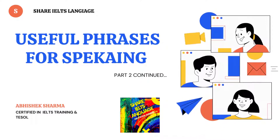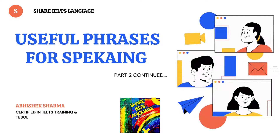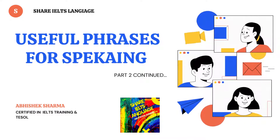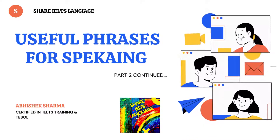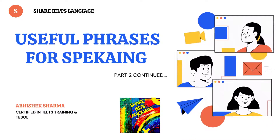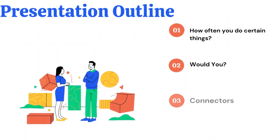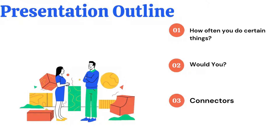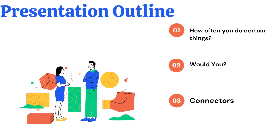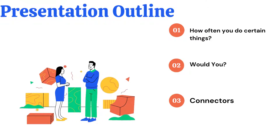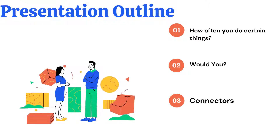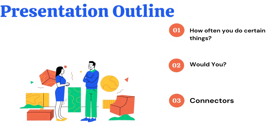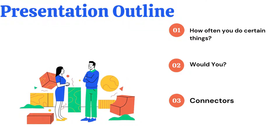Hello everyone, welcome back to my channel, Share IELTS Language. This is Abhishek here. Today I am going to talk about the continued part of useful phrases for speaking — Part 2 — which has already been uploaded on my channel. Our three topics today are: how often you do certain things, speculating about the future, and connectors to change your way of saying yes or no.